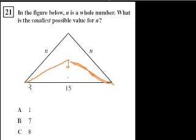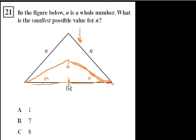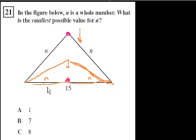But what happens if we lowered it all the way — if we just flattened this triangle all the way down? So essentially this would be the top of it, and then this would be n, and this would be n. I've flattened the triangle, so these two sides just go flat with the base. So this is as small as n could get.